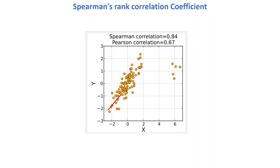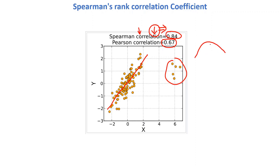Consider a dataset that has a linear relationship. If our data has an outlier, using the Pearson correlation gives 0.67, but using the Spearman rank correlation on the same dataset gives 0.84. So it is generally better to use the Spearman correlation coefficient because it gives a better value compared to Pearson — it works better in both non-linear and linear cases.